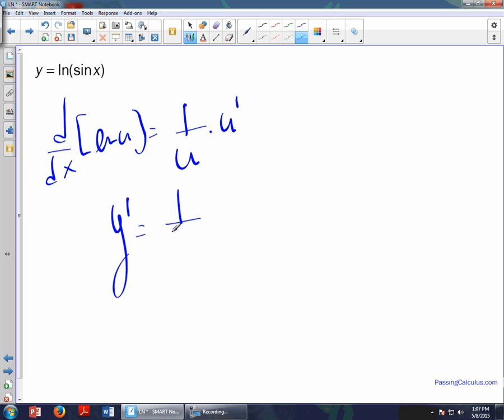sine of x, times the derivative of sine of x. So the derivative of sine, hopefully you have your trig derivatives memorized, is cos. So of course this is cos x over sine x. And this is a pretty obvious simplification for most of us I would think. If you haven't done any identities it might be difficult, but cos over sine is cotan of x. So there's my derivative, y prime is equal to cotan of x.